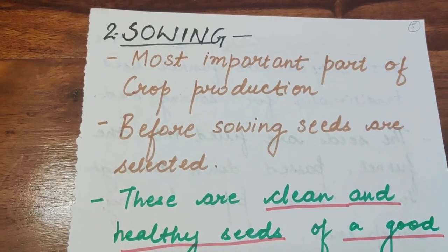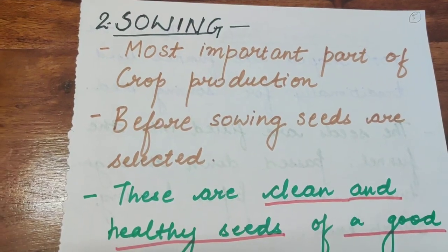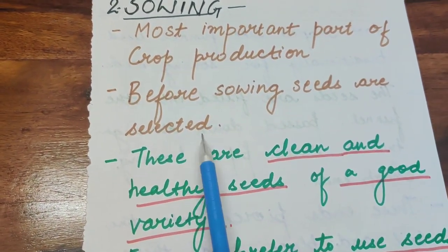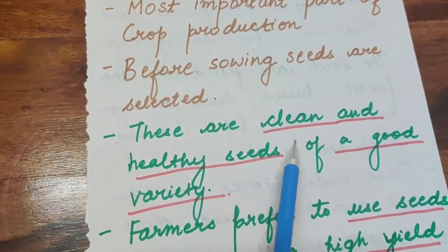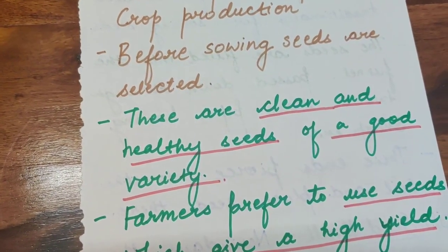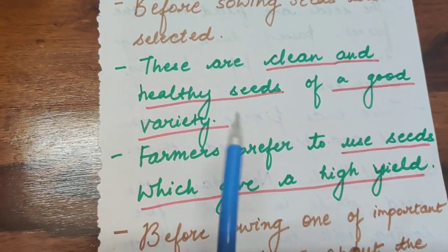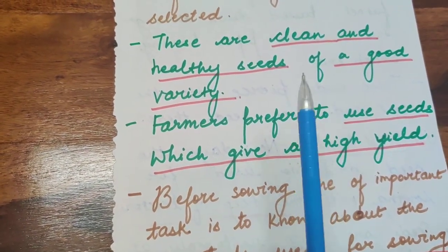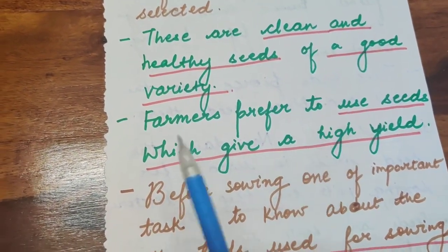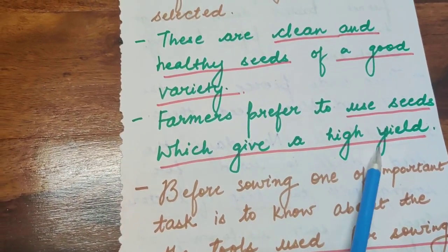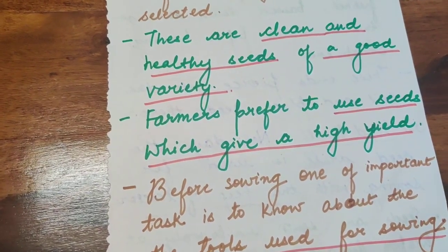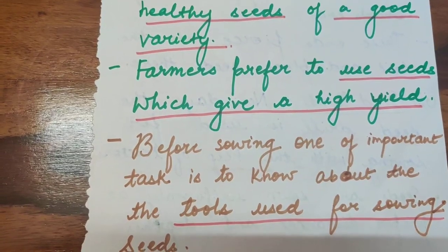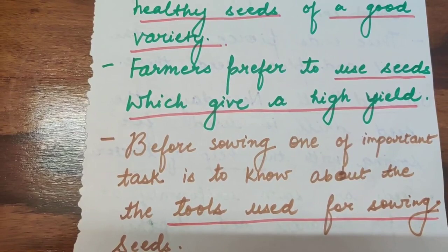The second step is sowing, which is the most important part of crop production. Before sowing, seeds must be selected properly. Seeds should be clean, healthy, and of a good variety. Farmers prefer seeds that give a high yield, since crop production supports both agricultural and economic growth.